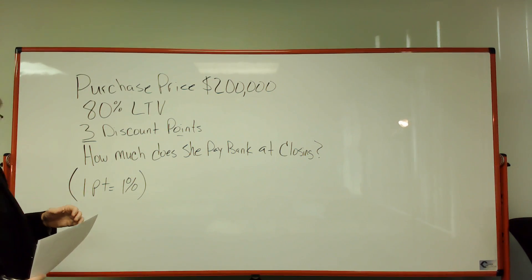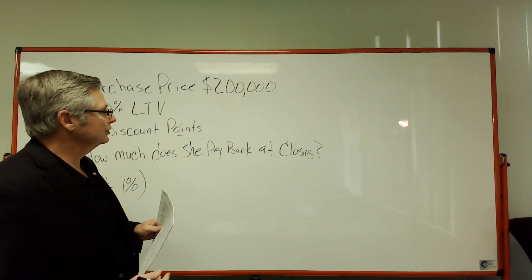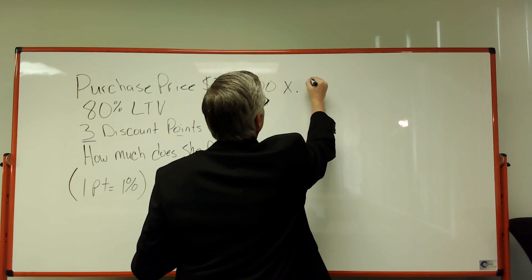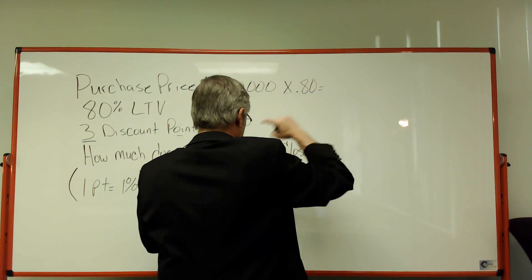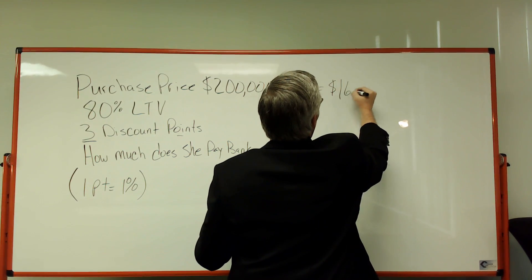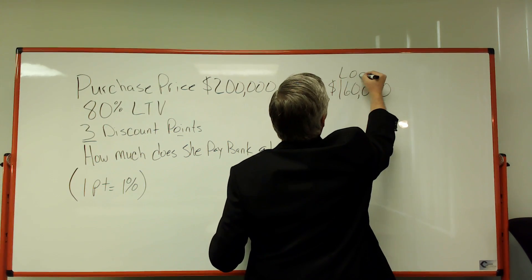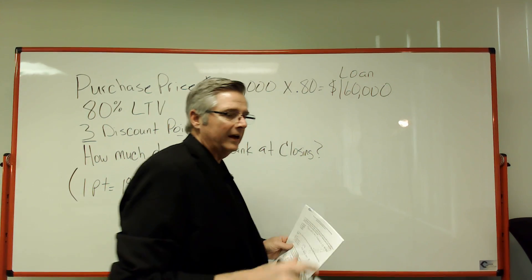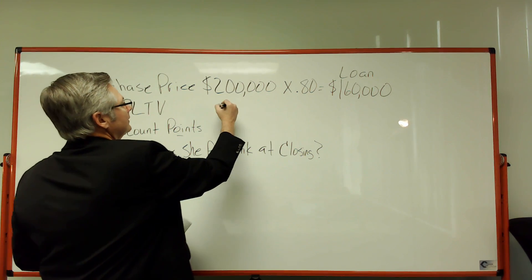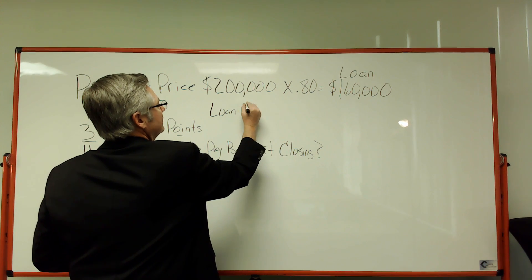First, we're going to calculate based on the loan amount. The loan amount is $200,000 times 0.80, which comes out to a loan of $160,000. We need that loan amount because the discount points calculation will be based on it.